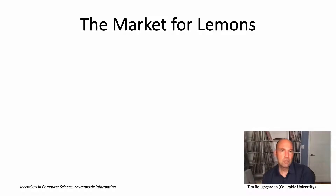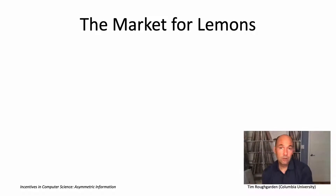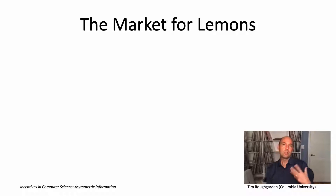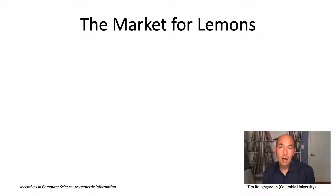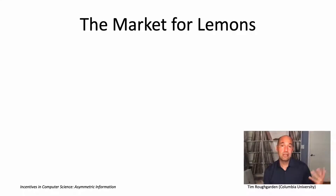Let's begin with adverse selection, which shows how a form of market failure can occur when one side of the market — meaning either the buyers or the sellers — has strictly more information about the quality or value of the goods in the market than the other side. I want to start with the academically most famous example and then apply those lessons back to online marketplaces.